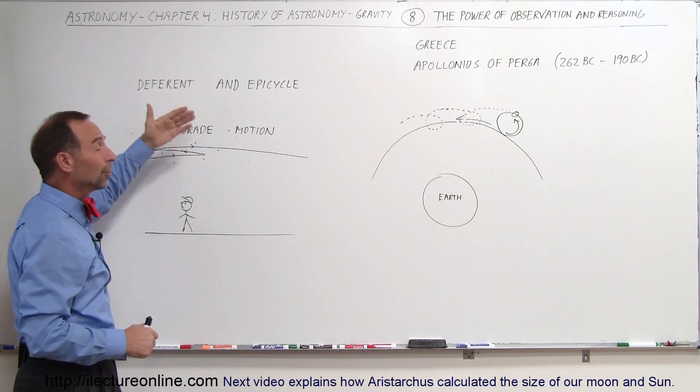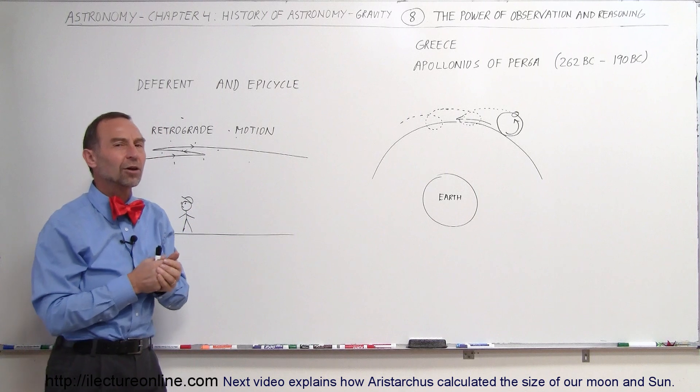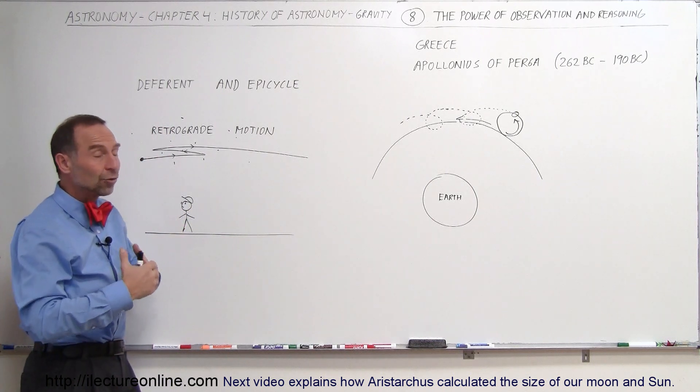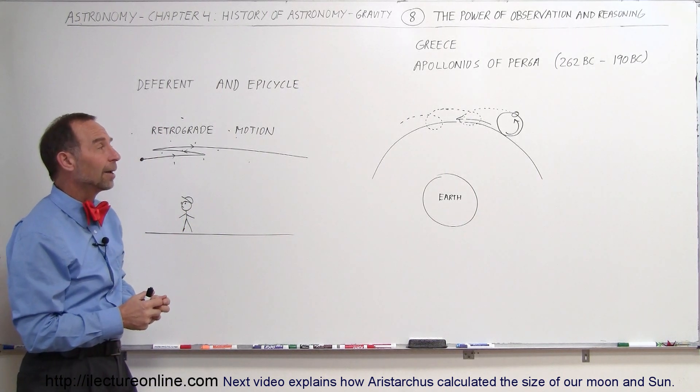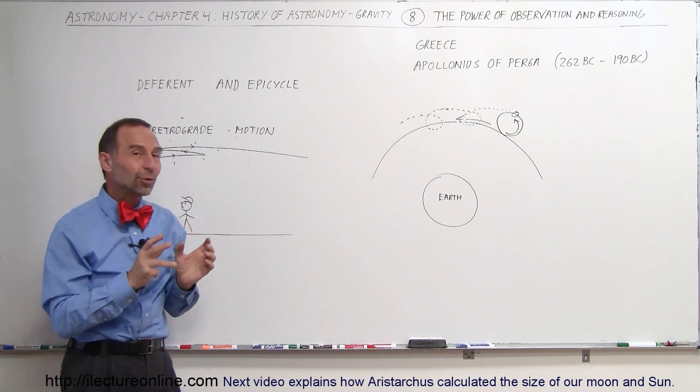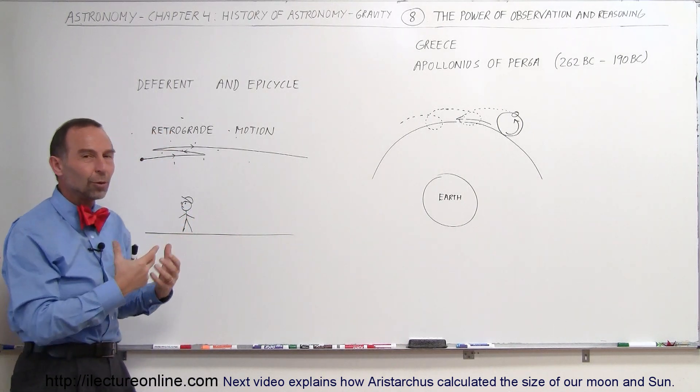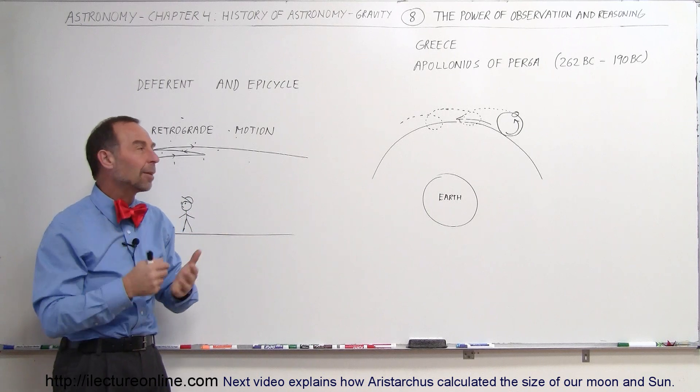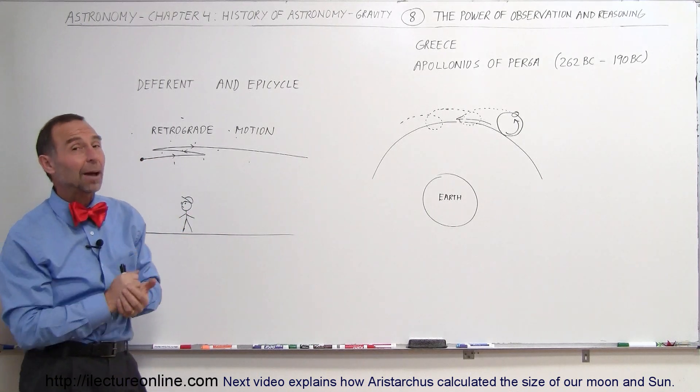This theory of deferent and epicycles hung around for a very long time, for well over a thousand years, trying to explain what was going on in the sky. But you will see that there were some other discoveries made with the same principle of going out, looking for data and observations, and trying to figure out what was happening in the sky.